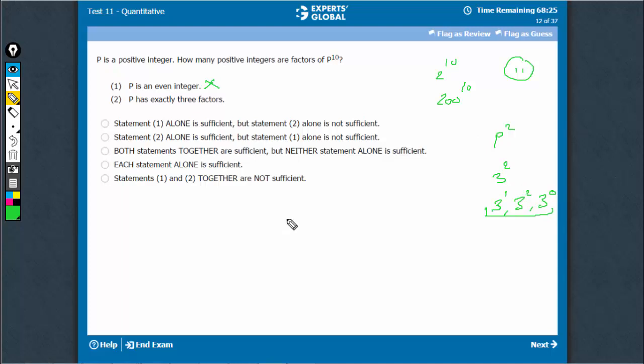Therefore, the number has to be something like prime raised to power 2, where P is a prime number. So, the number has to be something like 3 raised to power 2.